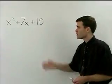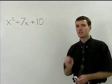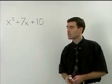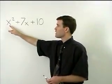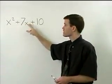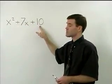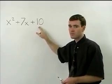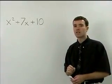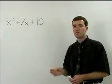However, the trinomial that you see is in a special form that can be factored in a new way. The first term has an x squared, the second term has an x, and the third term is a constant term. When a trinomial is in this form, it can be factored as the product of two binomials.